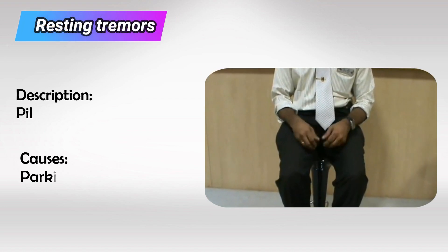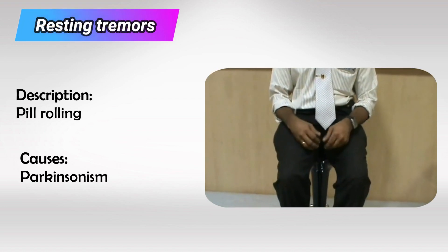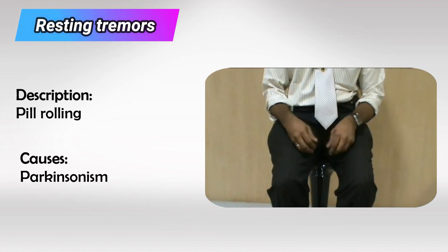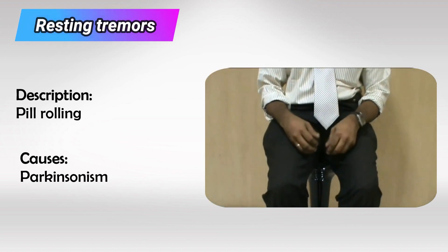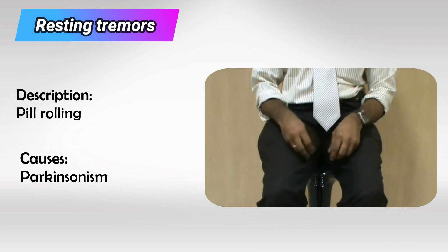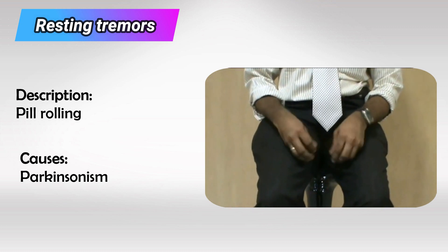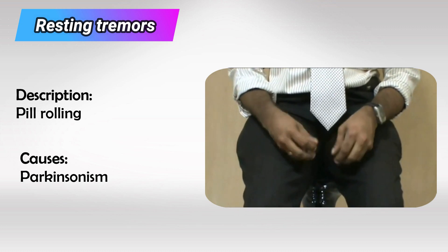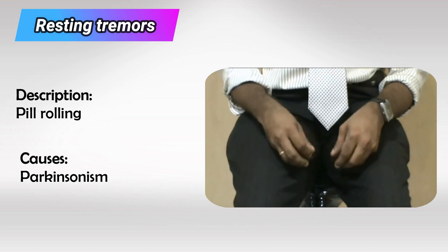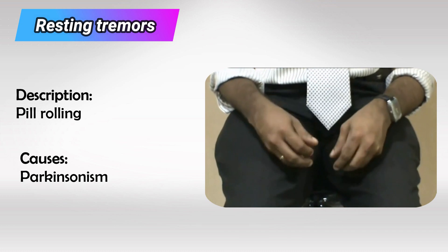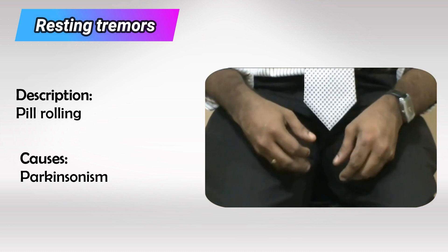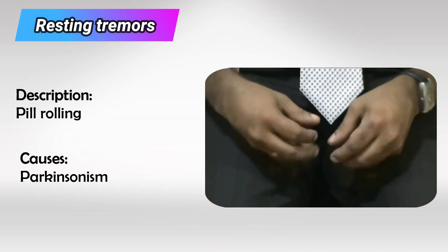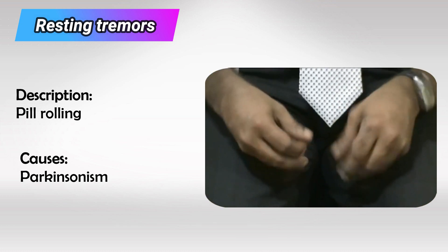Resting tremor occurs at rest and mainly involves either the neck or the fingers. If it involves the fingers it can be described as pill rolling, and we see it almost exclusively in Parkinsonism.